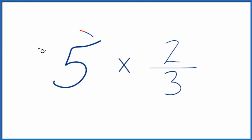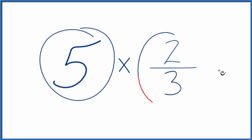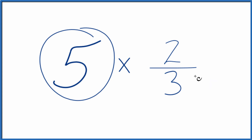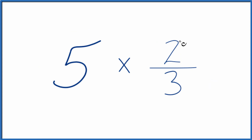If you want to multiply 5 times 2 thirds, here's how you can do that. First off, you could just add 2 thirds together 5 times. That would work — that would give the answer for 5 times 2 thirds.